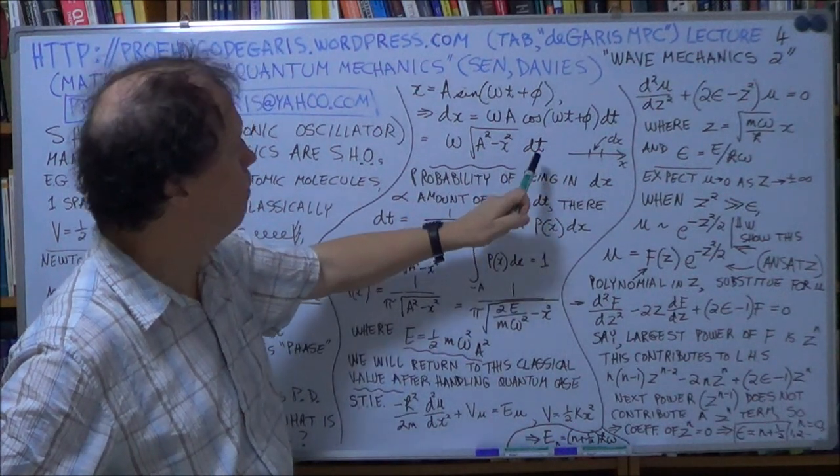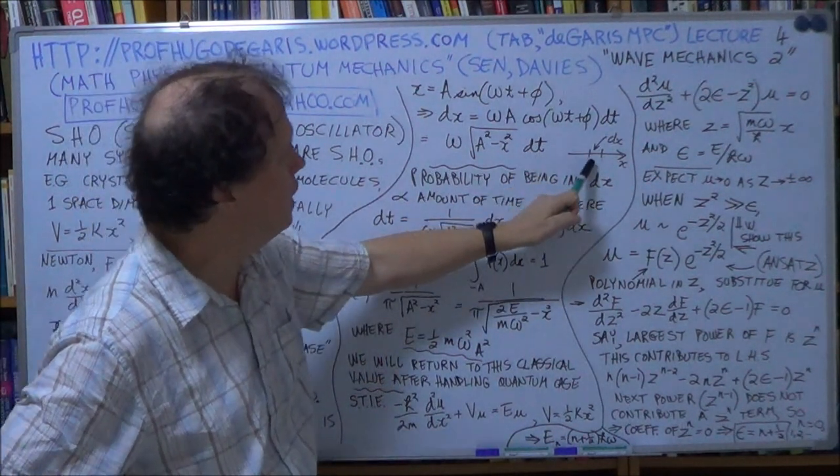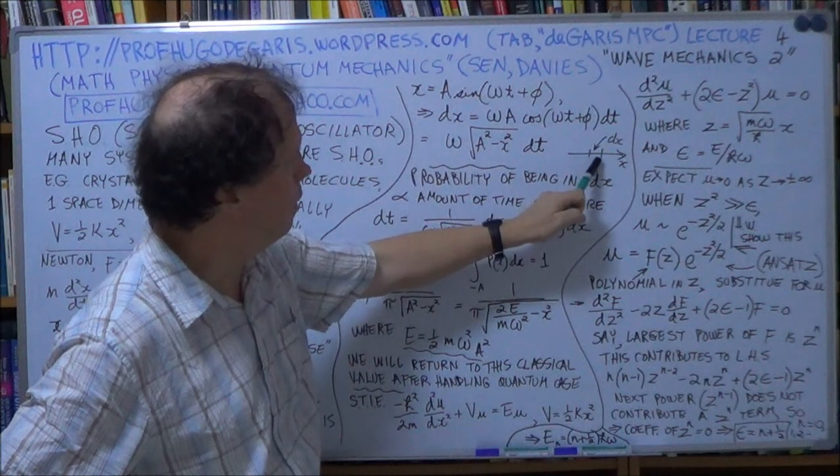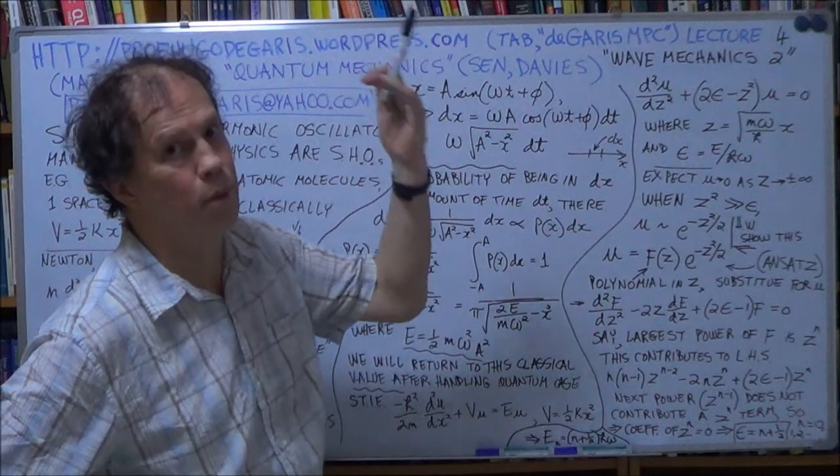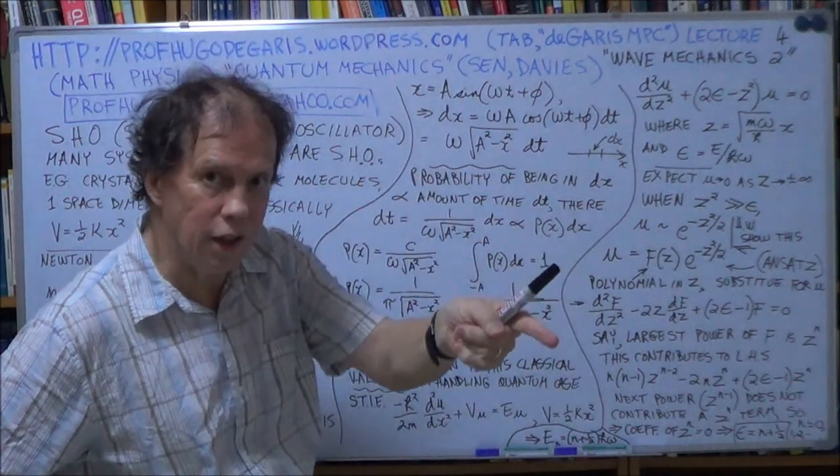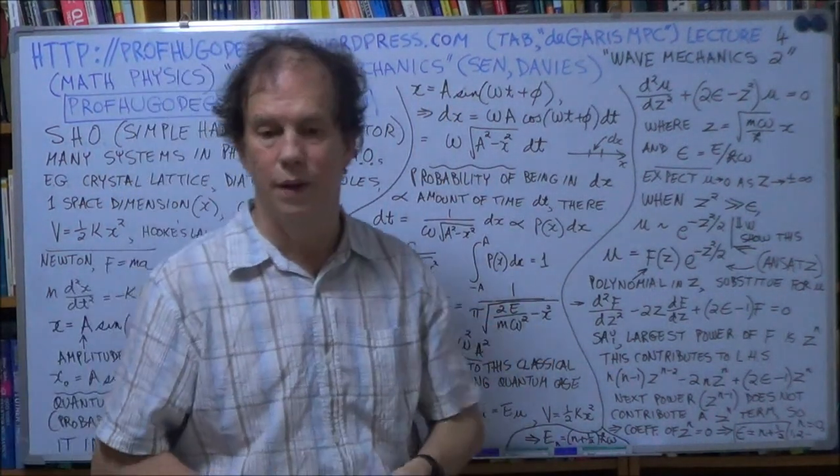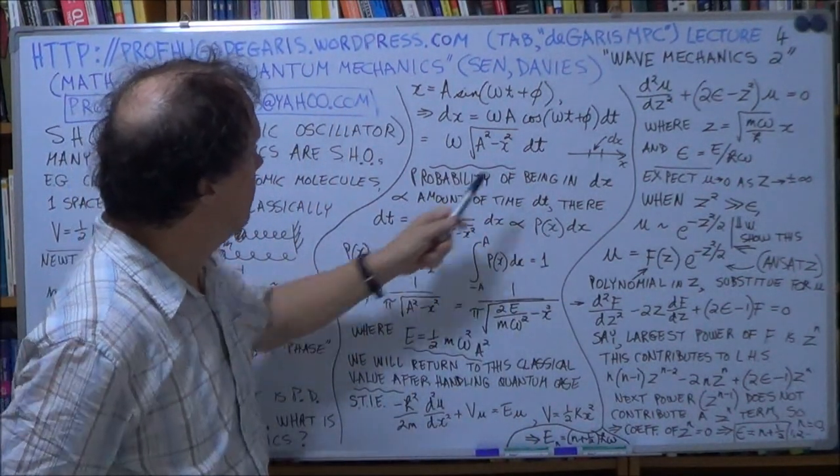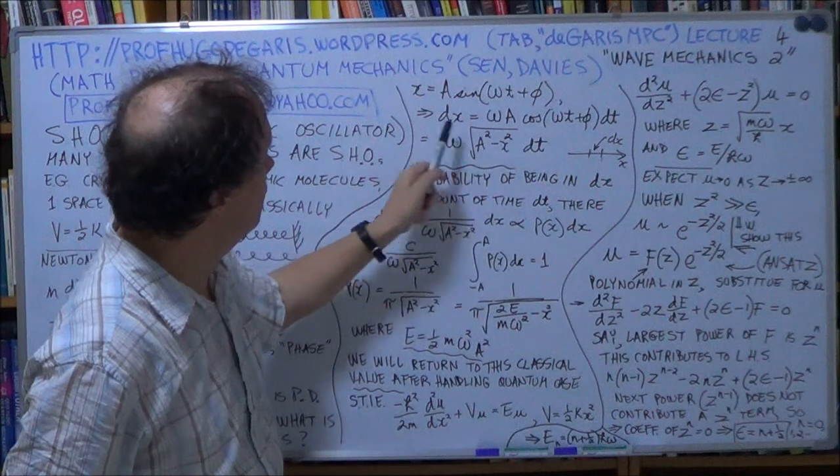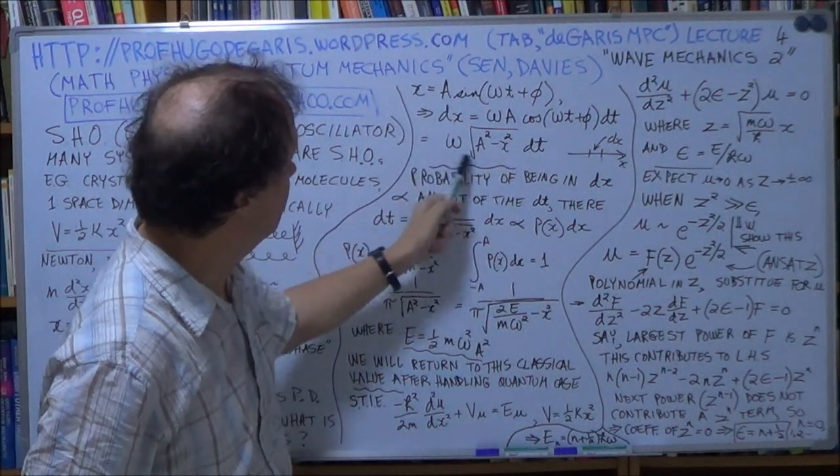So the bigger your dt is in this, the amount of time it spends in that little delta x, the bigger that dt is, the higher the probability is of finding it there. So therefore dt is dx divided by this.